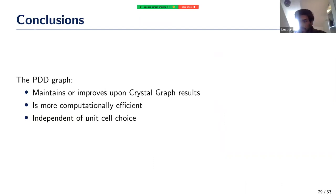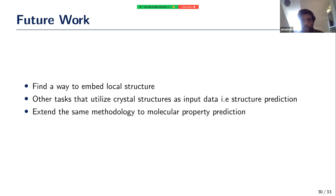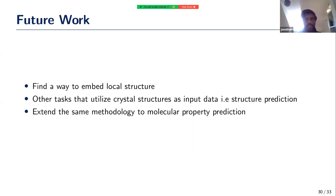In conclusion, the PDD graph maintains or improves upon crystal graph results while being a fraction of the size, making it more computationally efficient and enabling faster training and prediction. It is also independent of the unit cell choice, since the underlying PDD representation is itself unit-cell independent. Future work includes embedding local structural features such as angles to disambiguate local structural changes without requiring a large k, using the PDD graph as a target for generative models for crystal structure prediction, and extending the methodology to molecular property prediction.